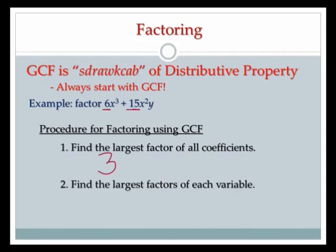It's not 2 because, even though 2 goes into 6, 2 does not go evenly into 15. And 5 goes into 15 evenly, but it does not go into 6 evenly. So 3 is the largest factor of all the coefficients. Remember, I'm doing GCF — greatest meaning the biggest, common meaning it has to be the same in all of them, and factor is what I'm looking to multiply out.